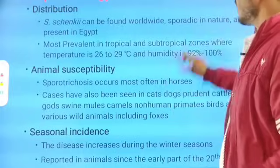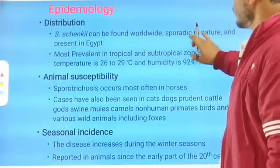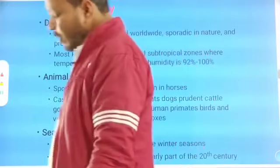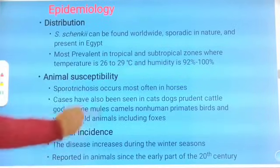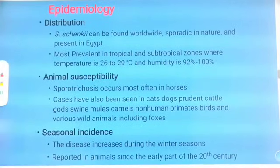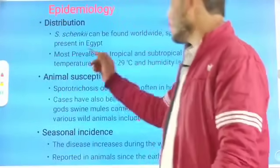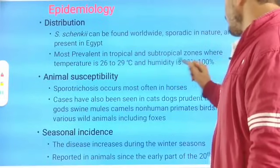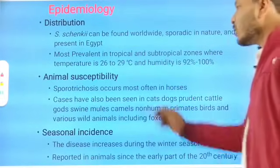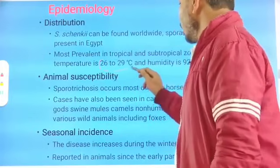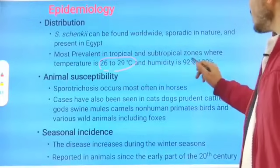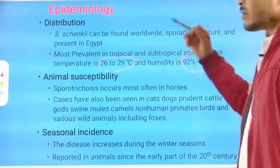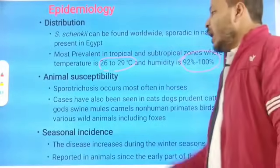Regarding epidemiology, Sporothrix is distributed worldwide and can be found in nature in particular areas. It is also present in Egypt. It is most prevalent in tropical and subtropical zones where temperature is near 26 to 29°C, which is most favorable for the fungi.